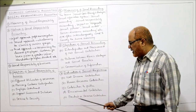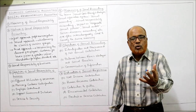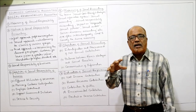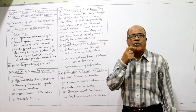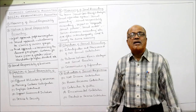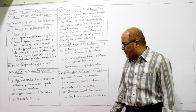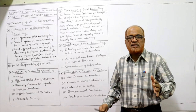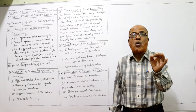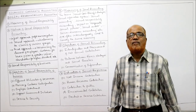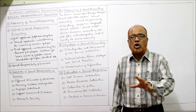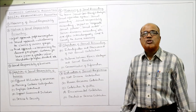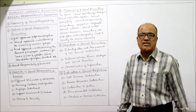Fourth indicator: environmental contribution. Industrial activities cause pollution and affect the environment. A company must spend money to reduce and minimize pollution — how much the company spends on reducing pollution is an indicator. Fifth indicator: product or service contribution. The goods or services the organization produces should be of quality, should satisfy the needs of customers, and should not be detrimental to the interest of customers. These are the indicators of social responsibility accounting.